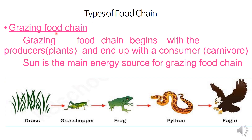First, grazing food chain. In the grazing food chain, it starts with producers. Producers are plants. Plants carry out food preparation using sunlight energy. Sun is the main source of energy for the grazing food chain.